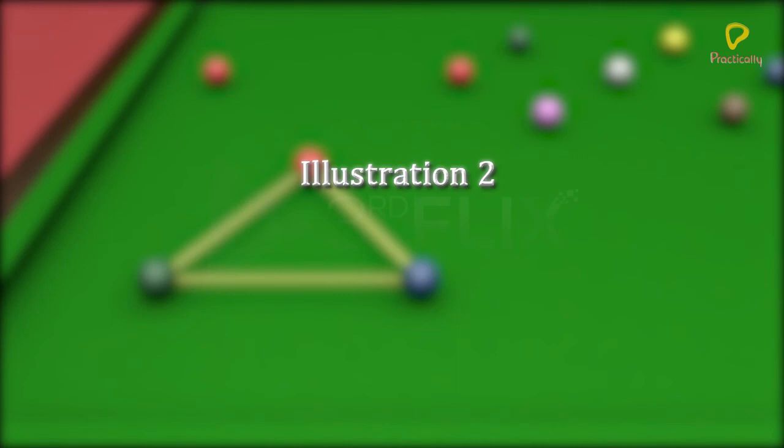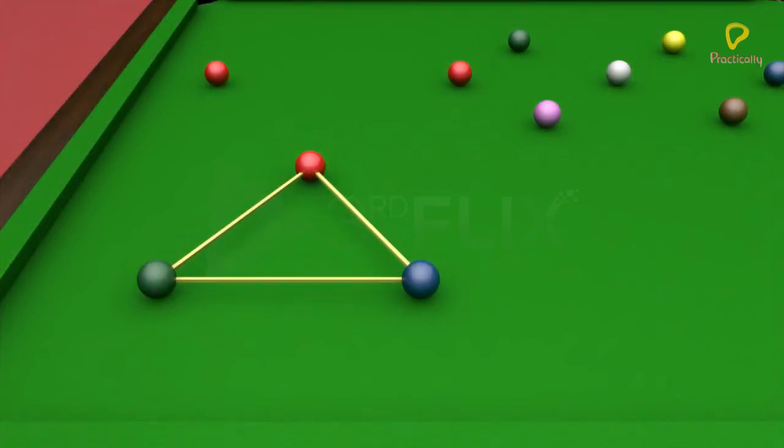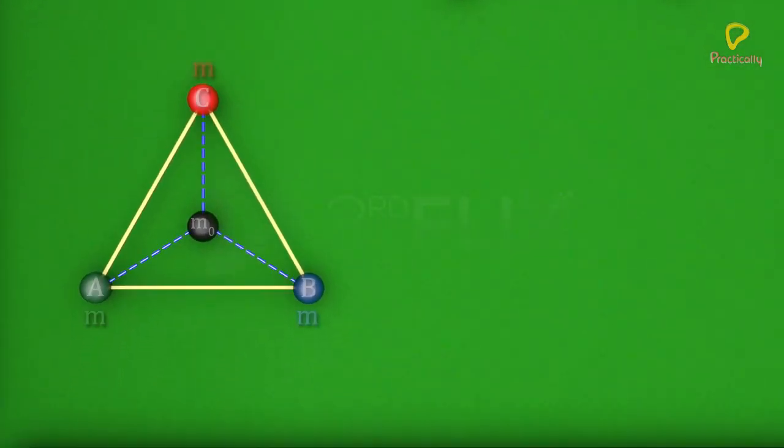Illustration 2: In the same scenario, what is the gravitational force acting on a mass M not kept at the centroid of the triangle? The masses kept at point A, B, and C are equidistant from the centroid.